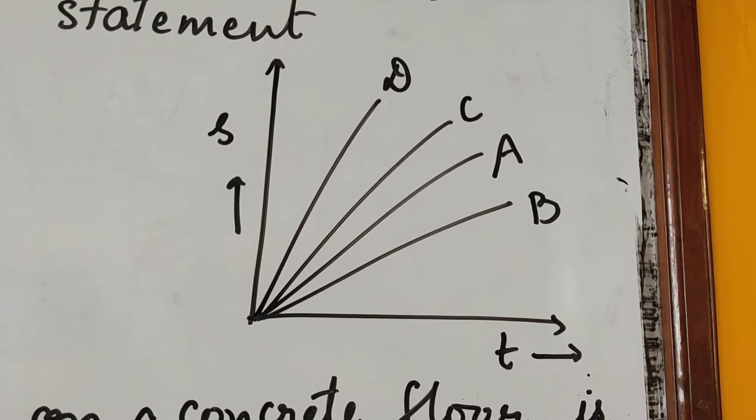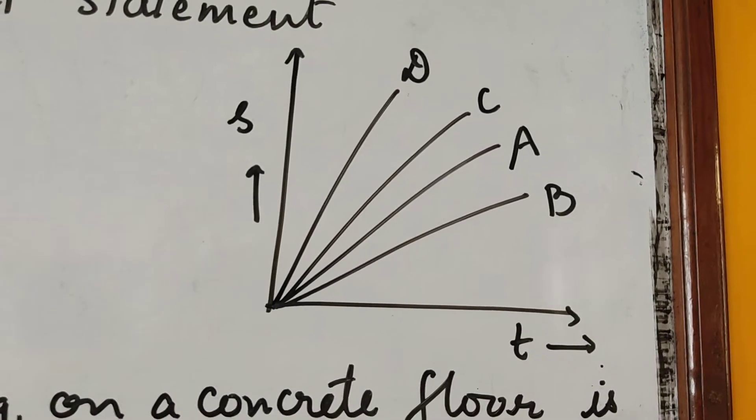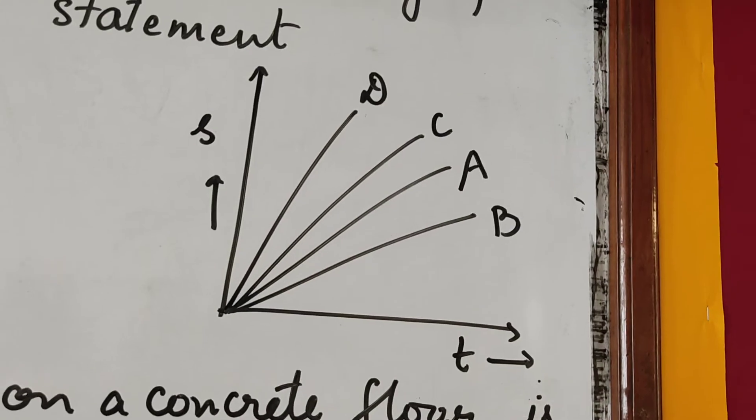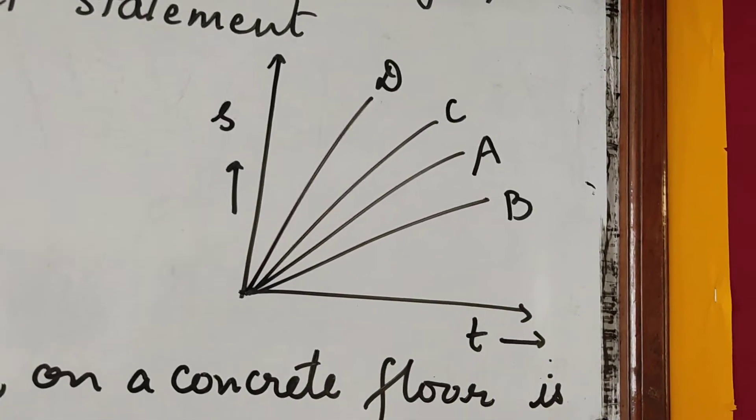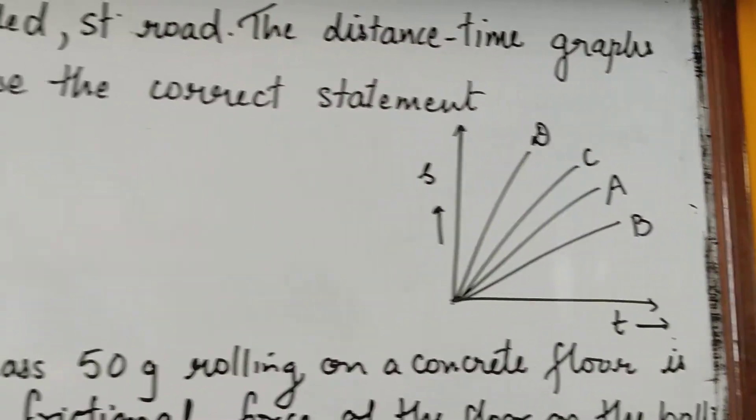We can easily see that if time is taken constant, then D is having the maximum distance covered. So we can have a look at the graph. If we can compare their slopes, it means we can compare their speeds.